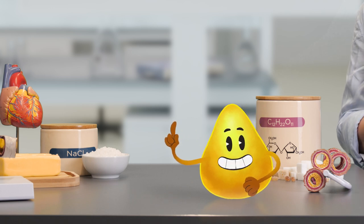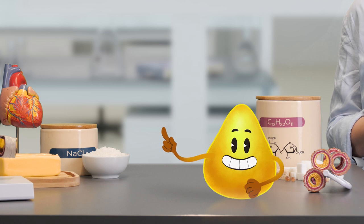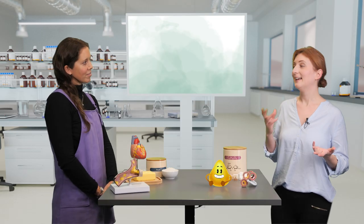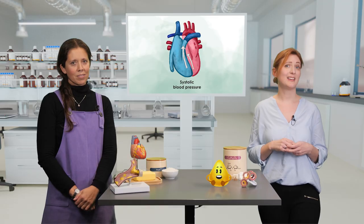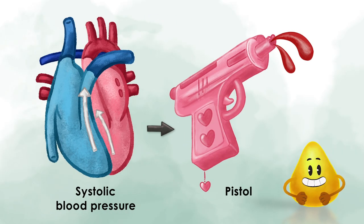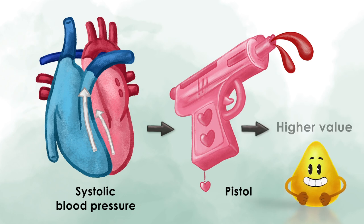Diastole, systole — it's easy to confuse those two. A helpful way to remember them: systole sounds a bit like 'pistole.' It is the one where the heart pushes out the blood like a pistol, which causes a lot of pressure. Therefore, it is also the higher value.